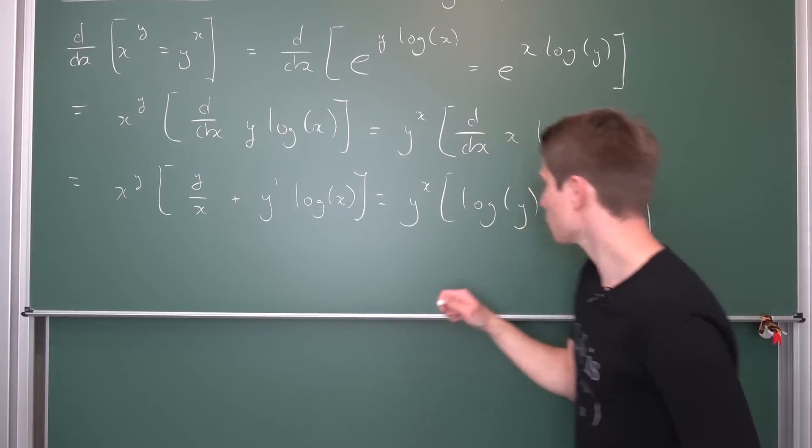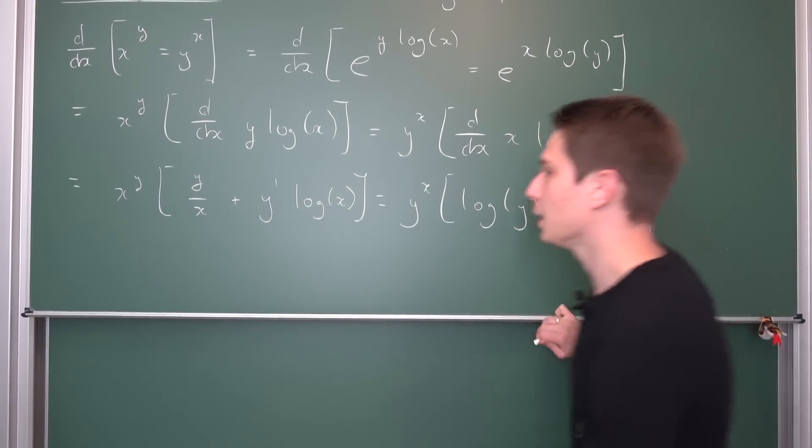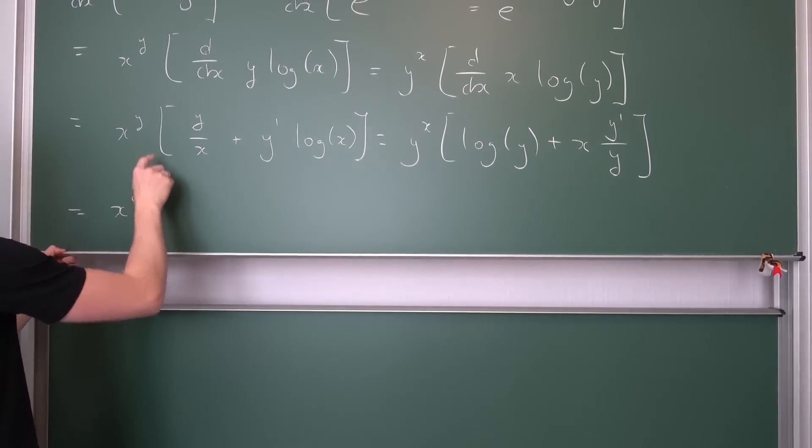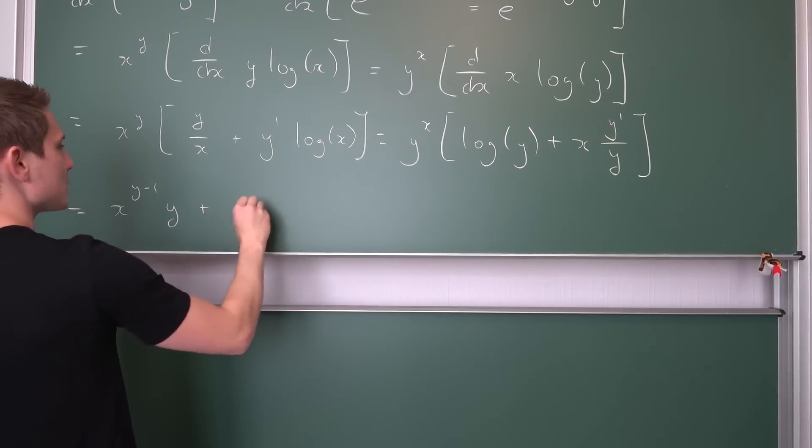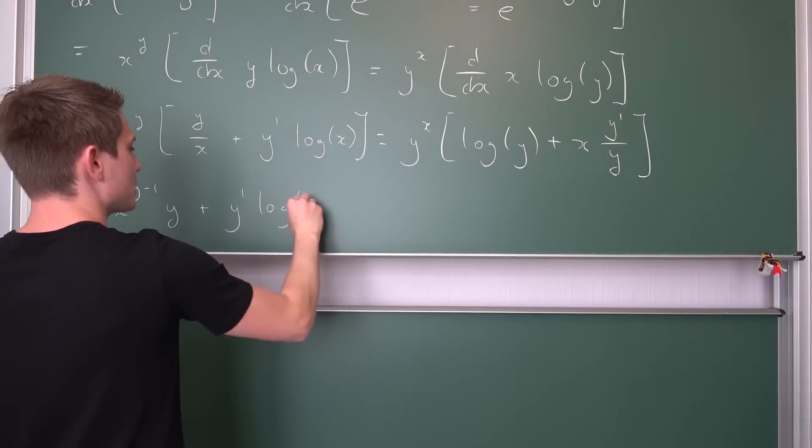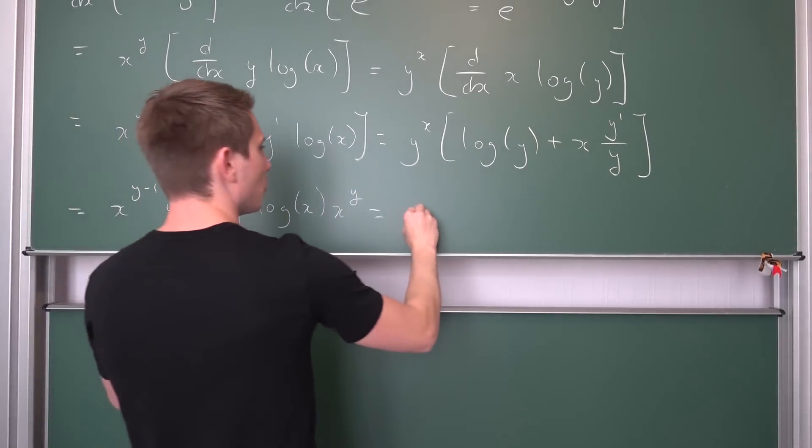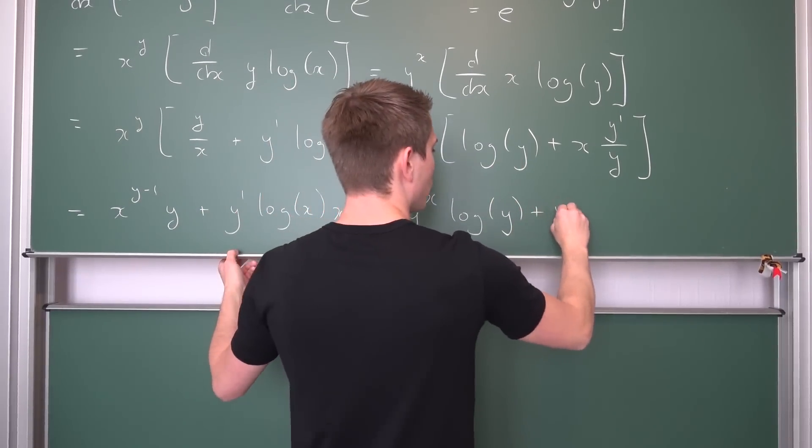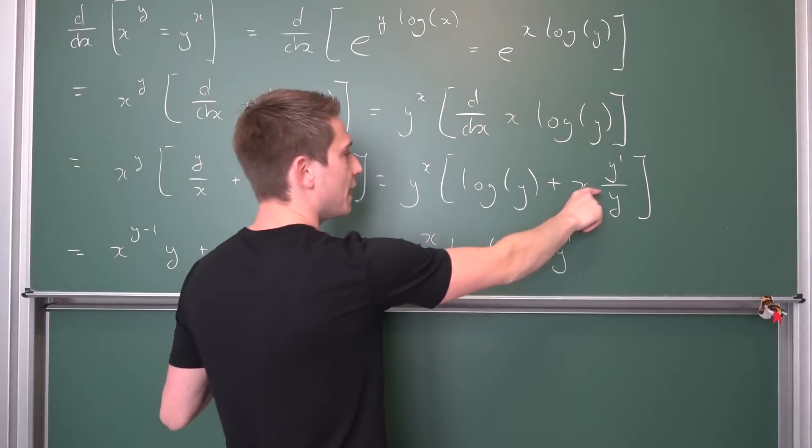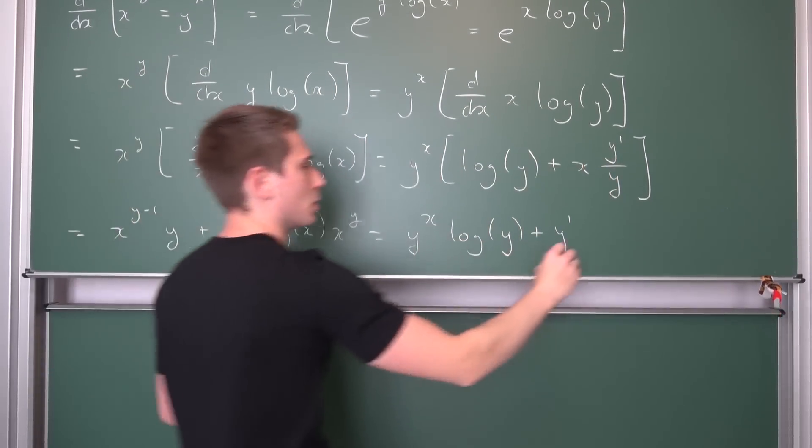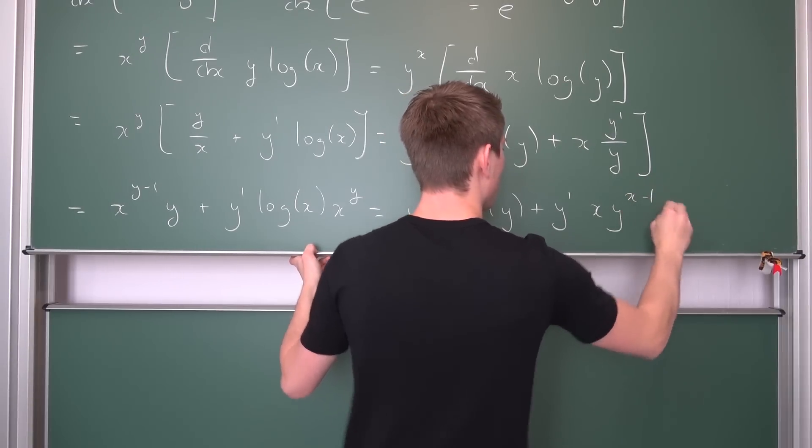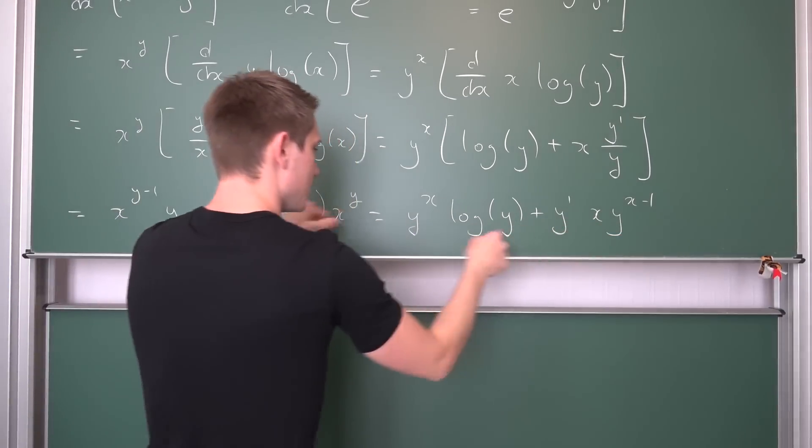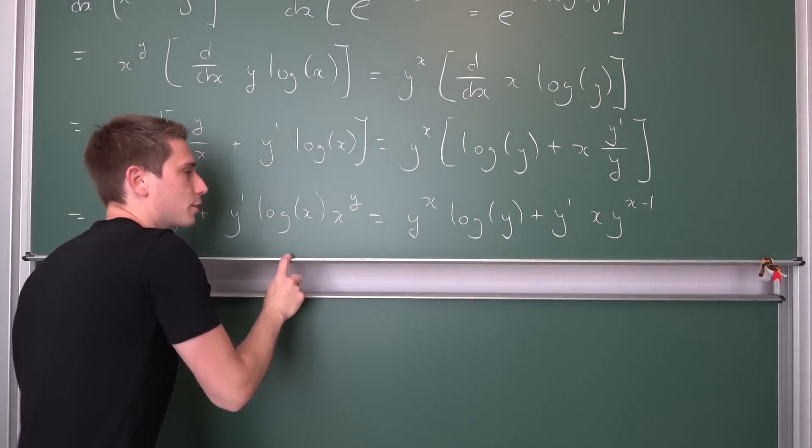Now we have a lot of stuff here. Let us write everything out and see what we get. We are going to distribute x to the y into everything. So this leaves us with x to the y minus 1 times y plus y prime log of x times x to the y, being equal to y to the x times the log of y, and then plus y prime, then we have x times y to the x minus 1 of power. Now we are going to bring this to this side and this to this side, then factor out y prime and we're basically done with everything.